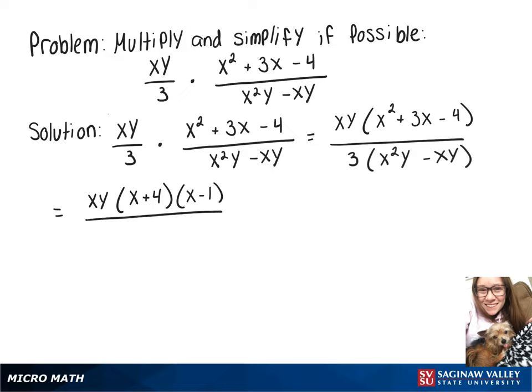On the bottom, we still have our 3 and then we can factor out an xy, which leaves us with x minus 1 in parentheses.